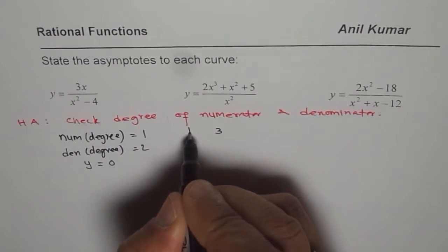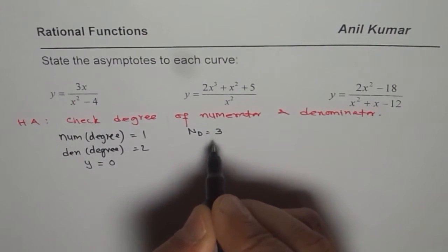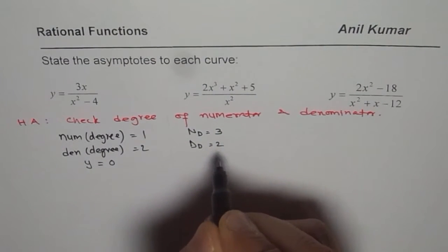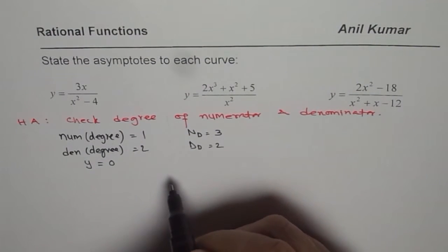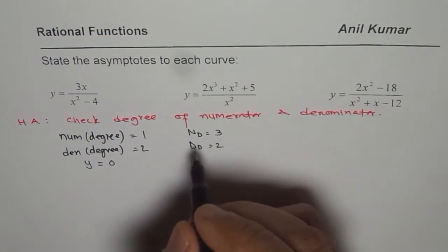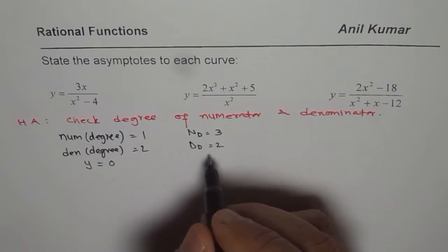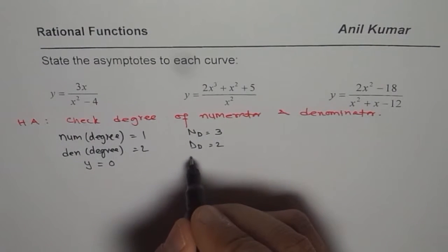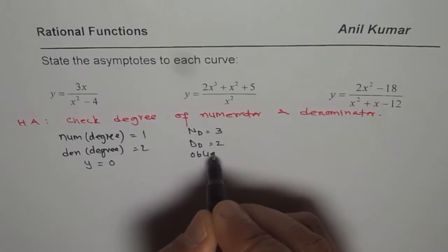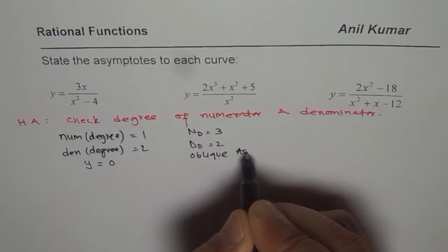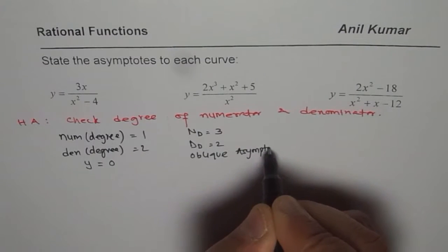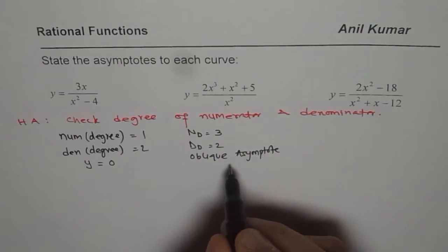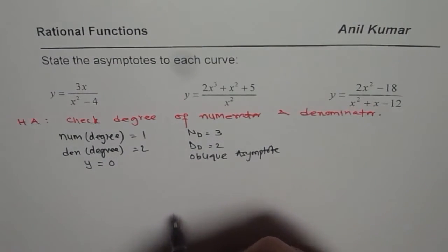In the second case, the numerator degree is 3 and the denominator degree is 2. Since the numerator degree is higher, in this case we do not have a horizontal asymptote. But we have an oblique asymptote.